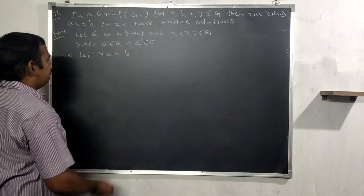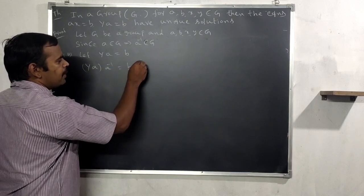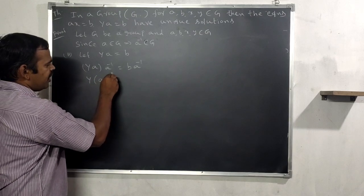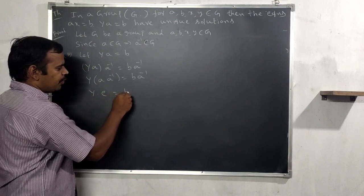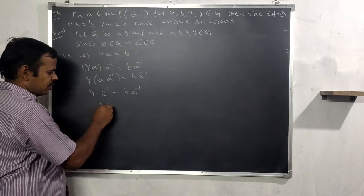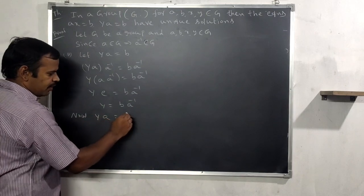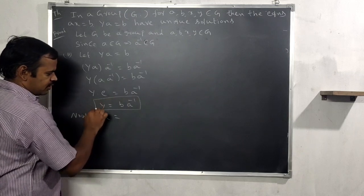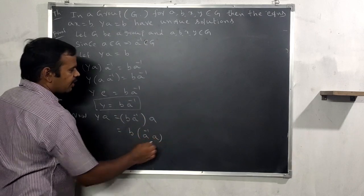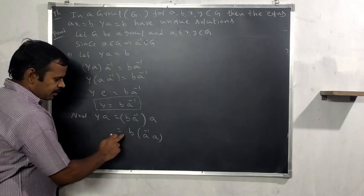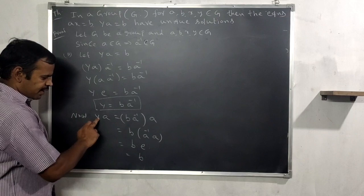Second condition: ya = b. Post-multiplying both sides by a inverse: y times a times a inverse = b times a inverse. Then y times e = b times a inverse, so y = ba inverse. Verifying: ba inverse times a = b times (a inverse times a) = b times e = b. So ya = b is satisfied.